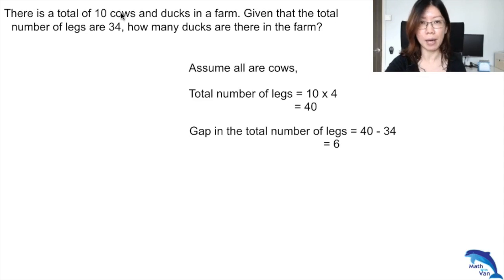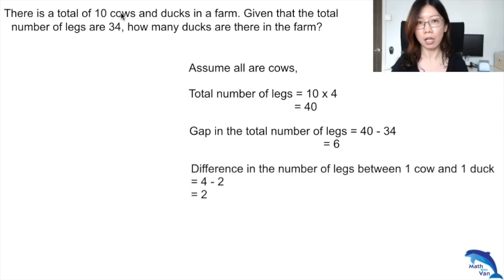You will definitely have a gap because there are some ducks. Once we have identified the gap, we have to think about the consequence. The consequence of taking out one cow and replacing it with one duck is that the total number of legs will drop by 2.